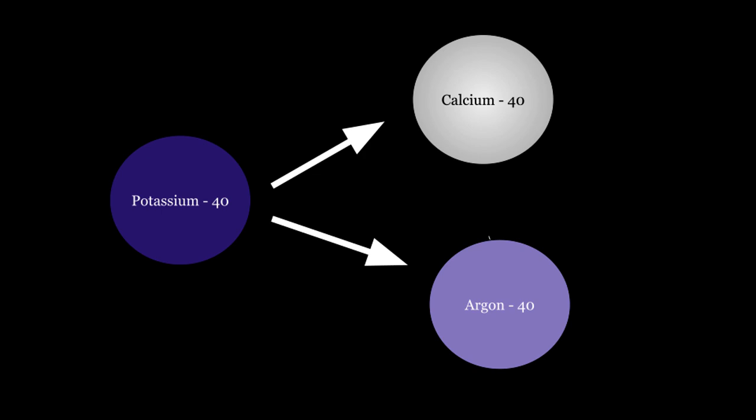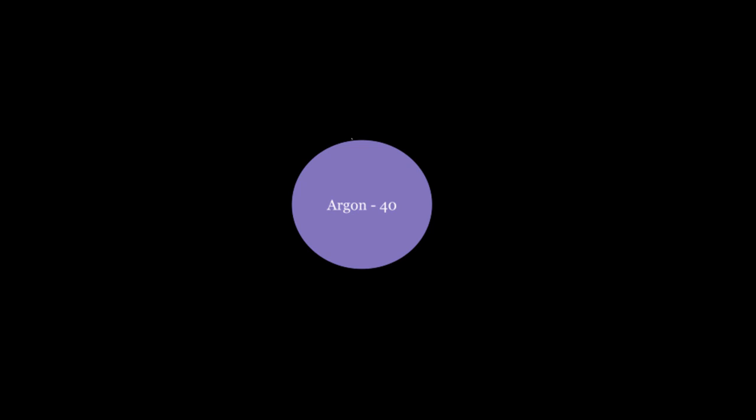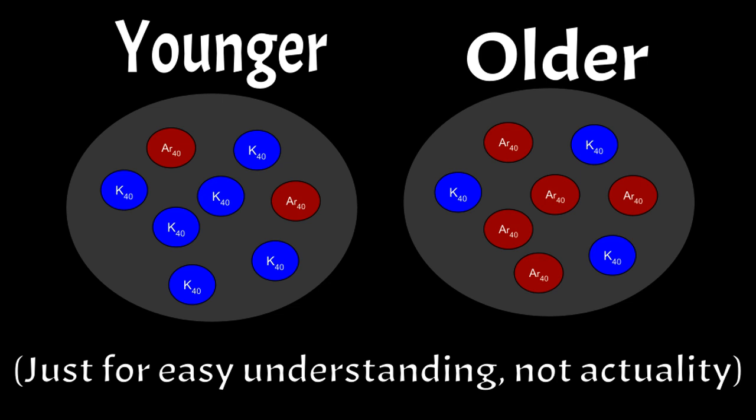For example, potassium-40 turns into argon-40 and calcium-40. Now, calcium is usually not used in radiometric dating. It's typically the argon that's measured. Scientists can measure the amount of trapped argon gas inside the rock to figure out how old it is. The more argon, the older it is.